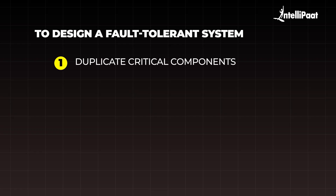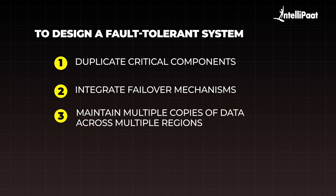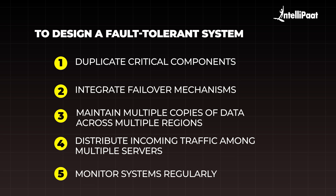In the event of a system failure, there are certain things you can do to design a fault-tolerant system: duplicating critical components so that if one fails, another can take over; integrating failover mechanisms so that if the primary server fails, standby servers can immediately switch places; maintaining multiple copies of data across nodes or regions to ensure availability; distributing traffic among multiple servers to avoid overloading a single server; and monitoring systems regularly to detect failures early.